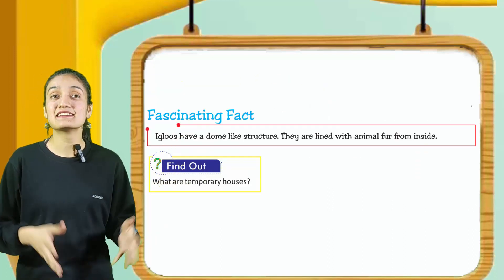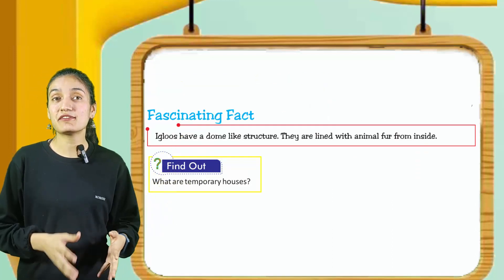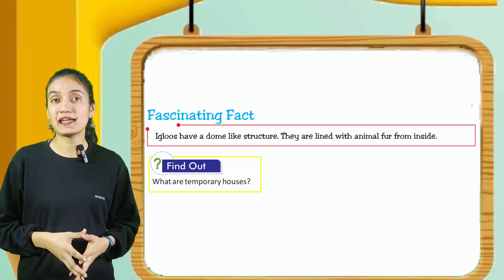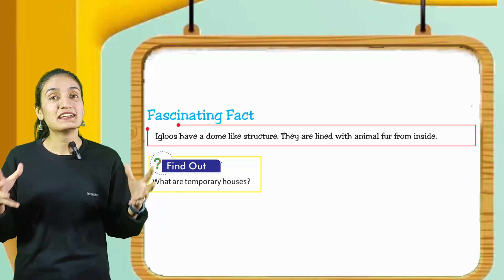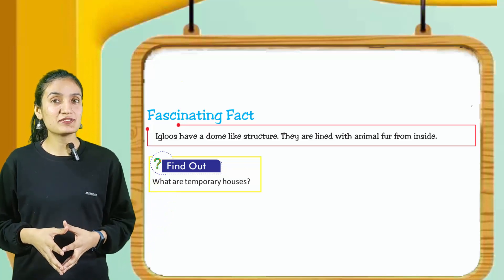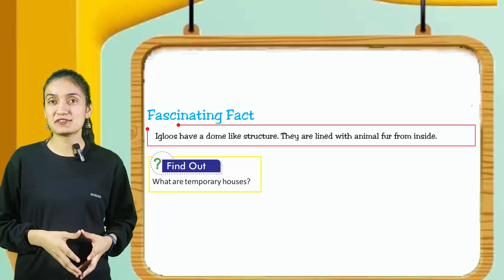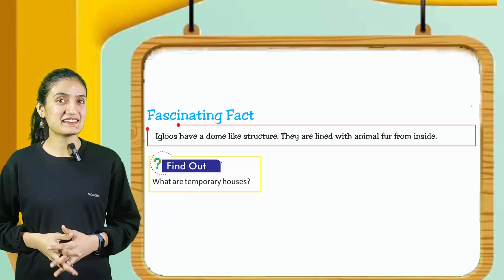The fascinating fact is igloos have a dome-like structure. They are lined with animal fur from inside.